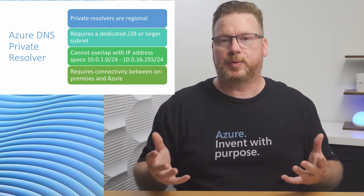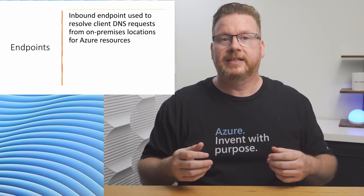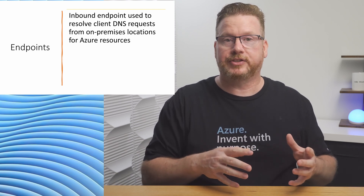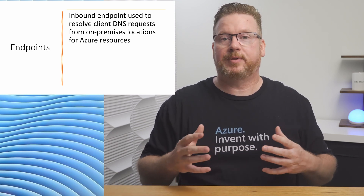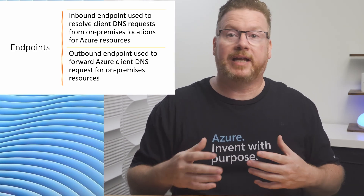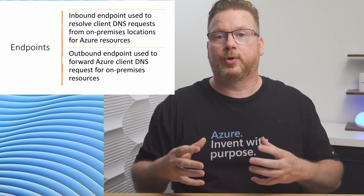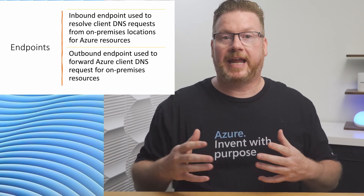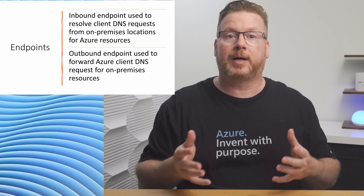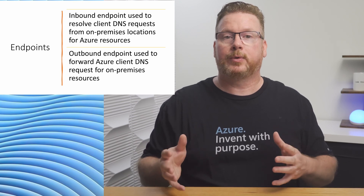Because we're working with private IP addresses between on-premises and Azure, there has to be connectivity between them — a VPN or ExpressRoute, for example. A private resolver works in two directions using endpoints. An inbound endpoint is used to resolve client requests from on-premises locations for Azure resources. There's also an outbound endpoint, used to forward requests from Azure clients to an authoritative DNS server on-premises. This video focuses on inbound endpoints — resolving DNS names in Azure from on-premises servers.